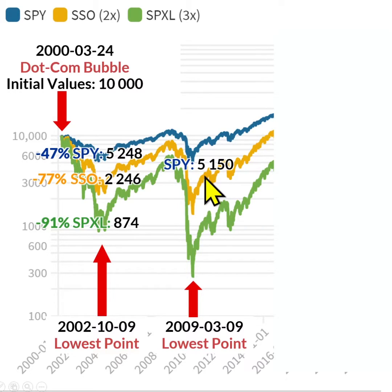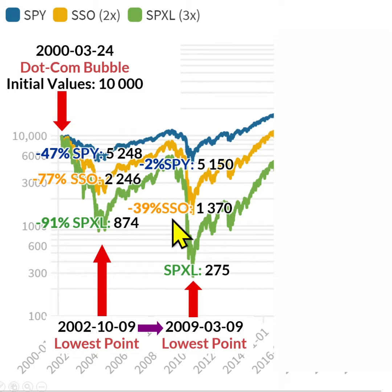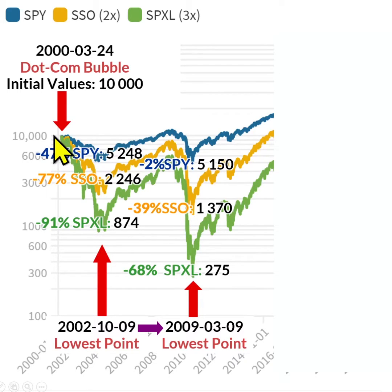How about the lowest point in 2009? SPY was $5,100; SSO, $1,300; and SPXL, $270. From 2002 to 2009, SPY dropped 2%, SSO minus 39%, and SPXL minus 68%. So SPXL would have dropped 97% from the highest point in 2000.